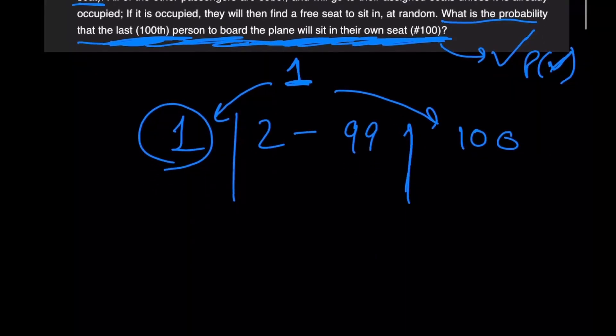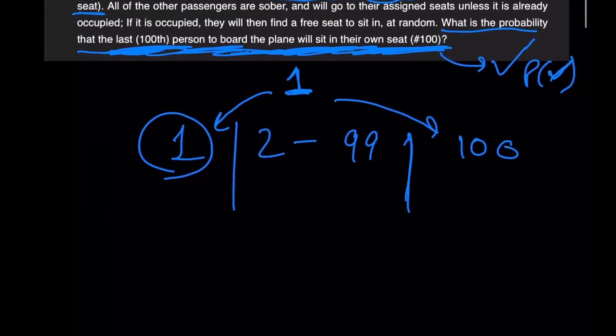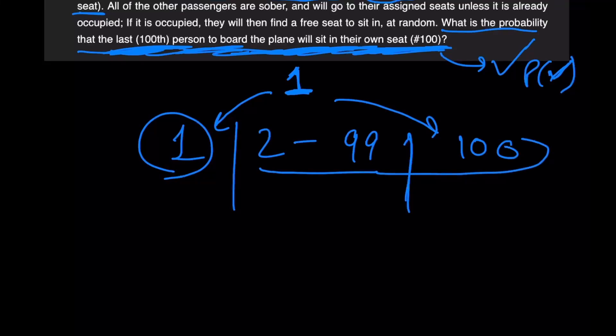Coming back to the case: if person number one picks seat number one by random, what happens is all passengers from 2 to 100 will be able to sit on their own seats, since those seats will be vacant. So in that case, it is guaranteed without any randomness that we are going to eventually hit success.